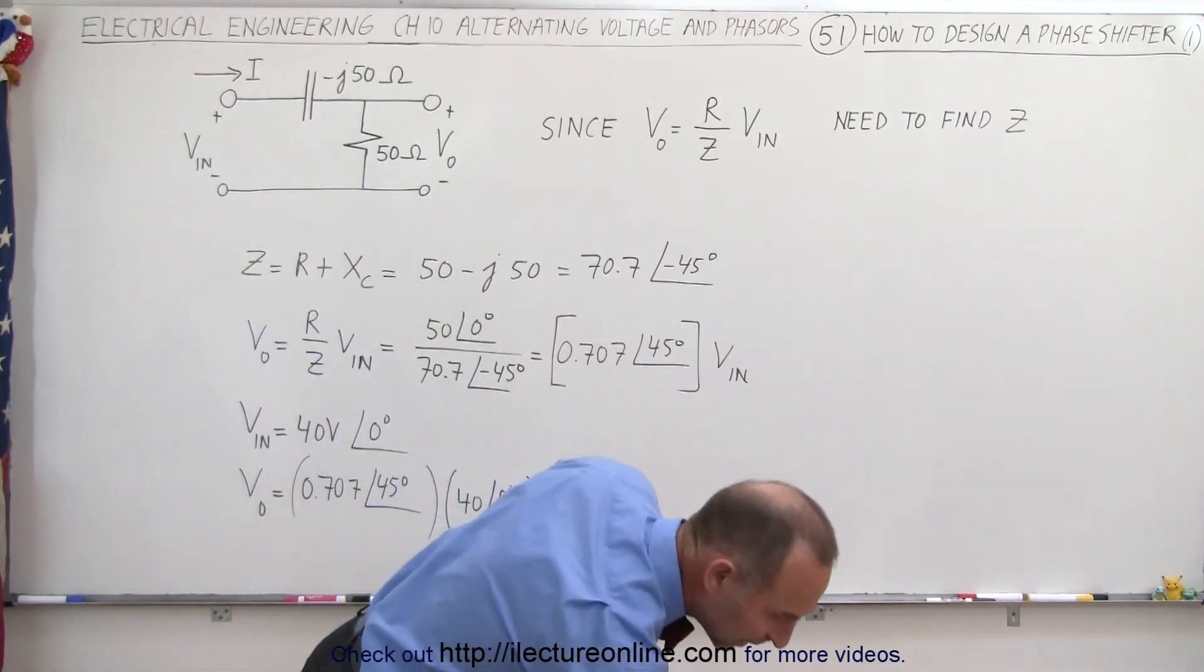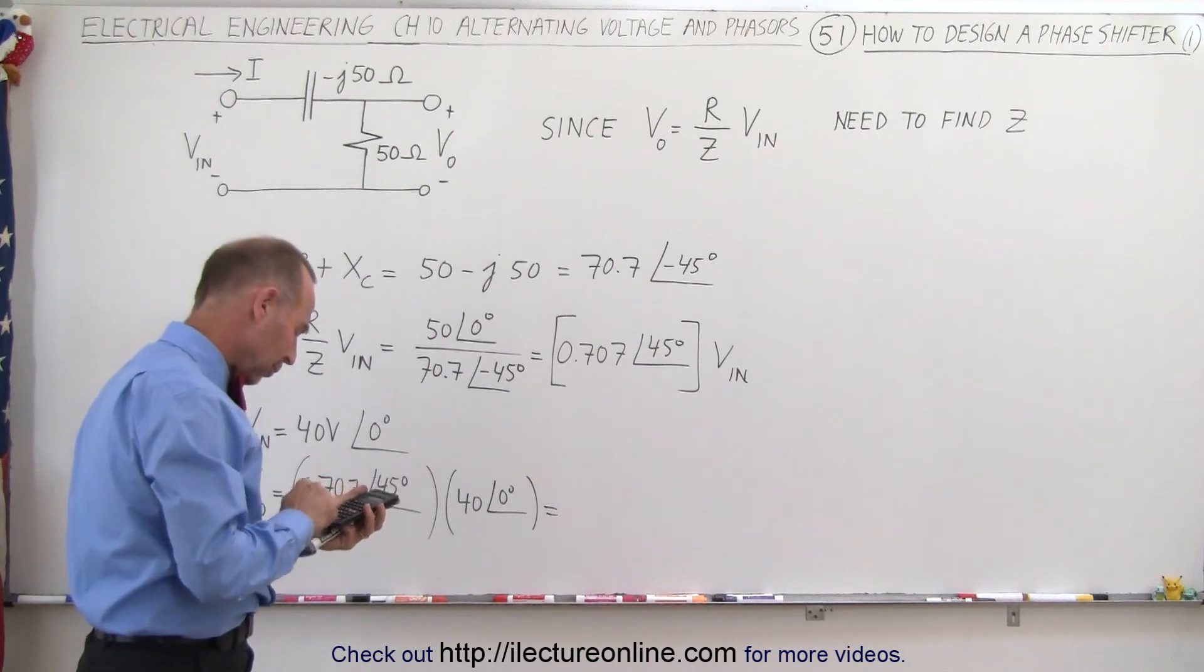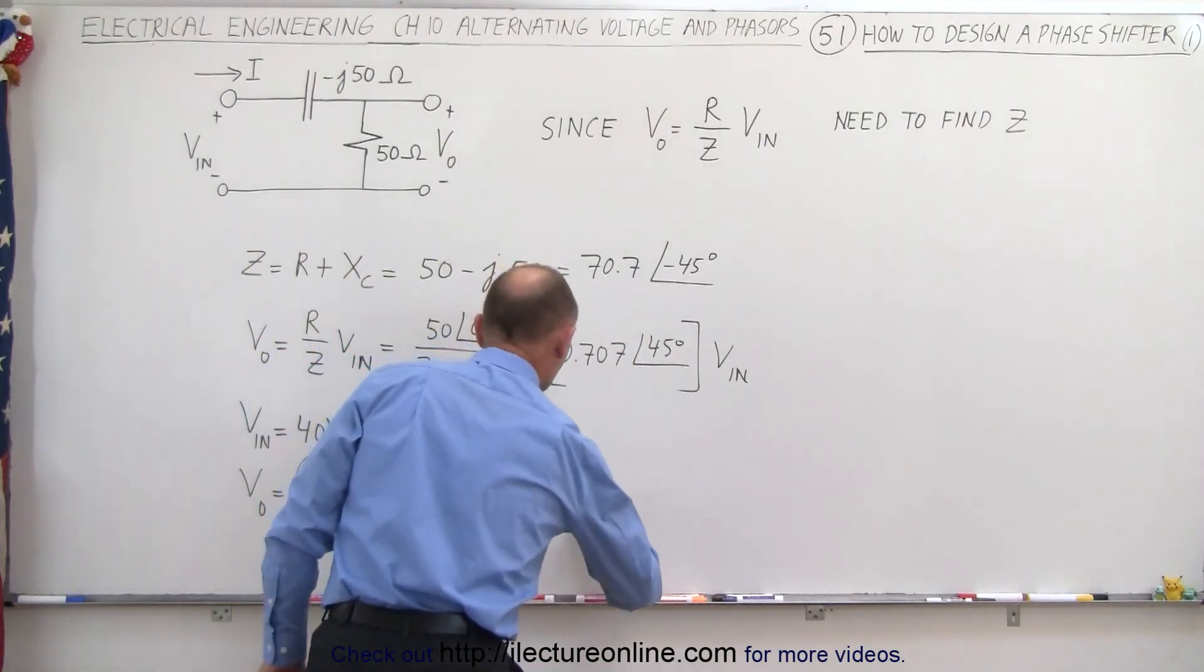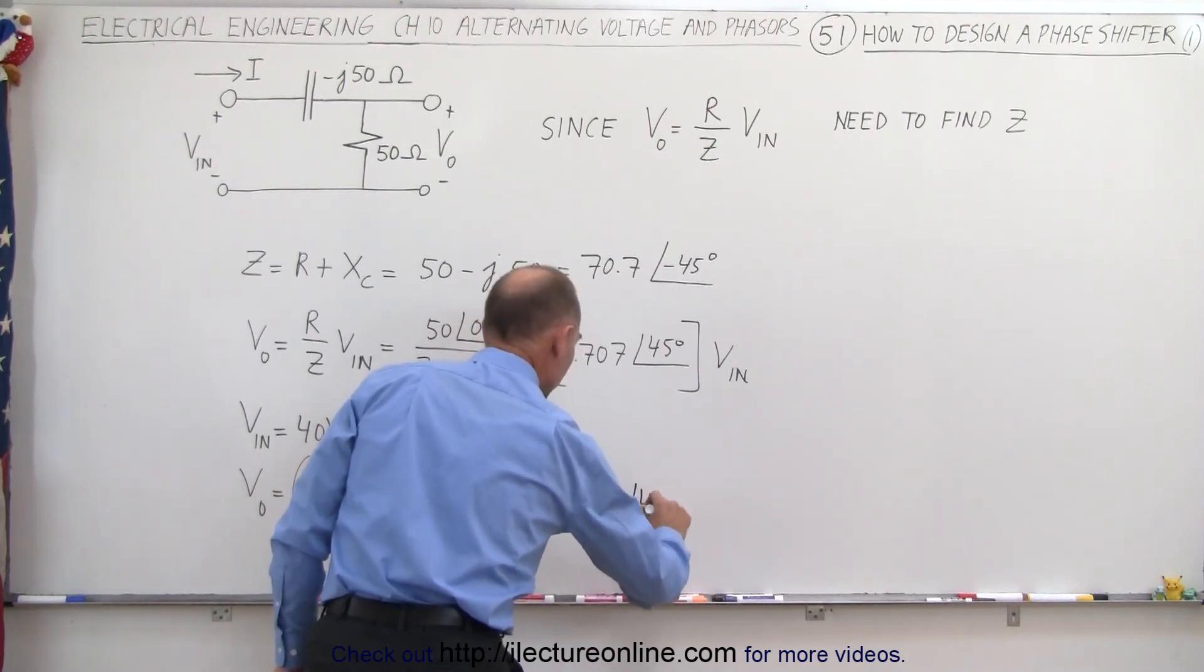40 times 0.707, that's equal to 28.3, so it would give us 28.3 with a phase difference of 45 degrees. Of course, that would be in volts.